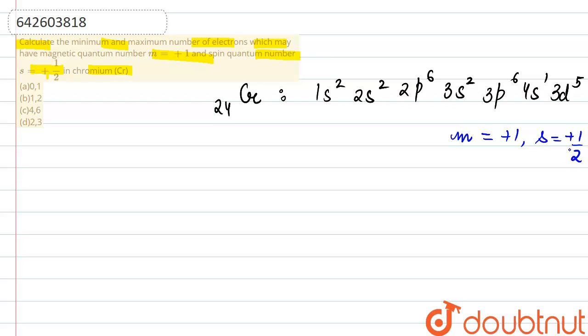So first of all, let's check the l and m values for these different subshells of s, p, d. The l value for s is 0 and the m value will also be 0.